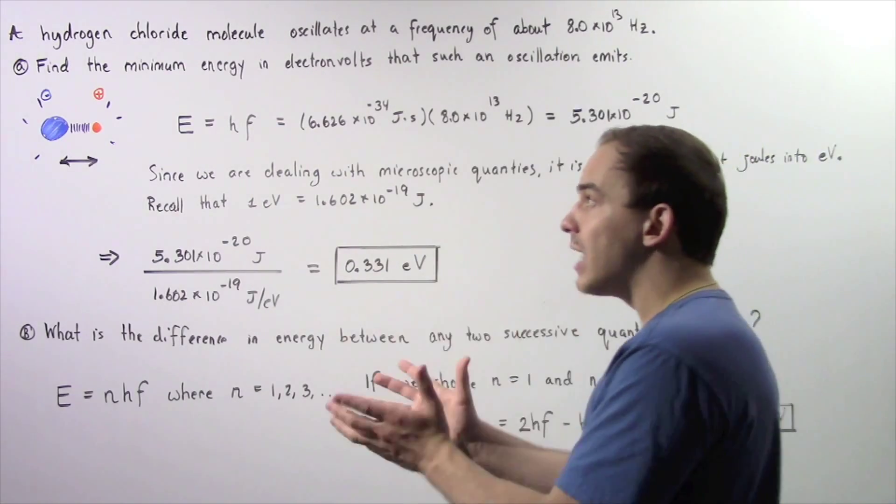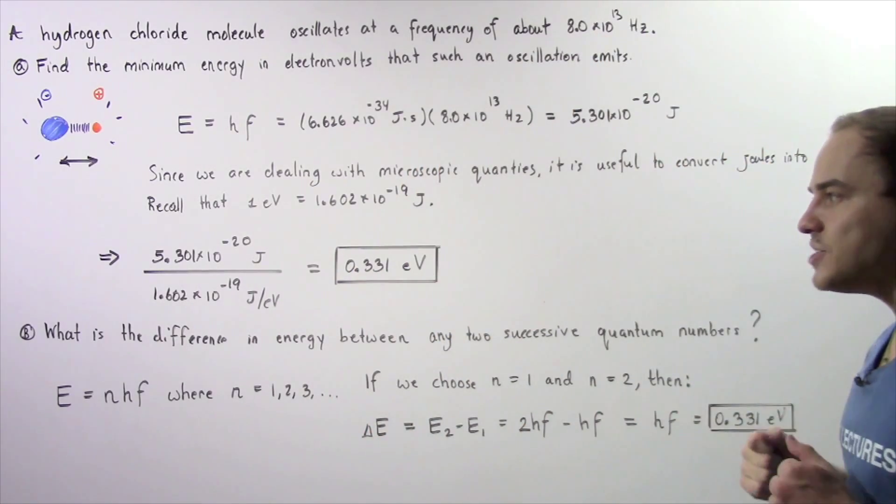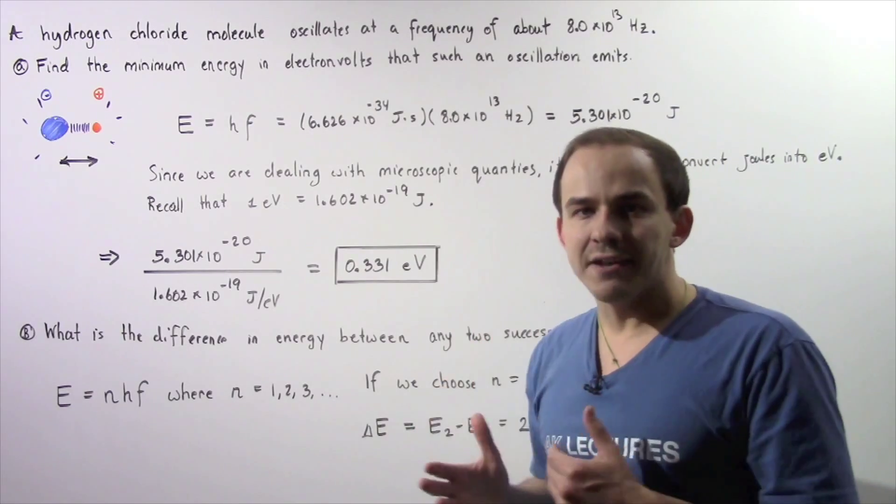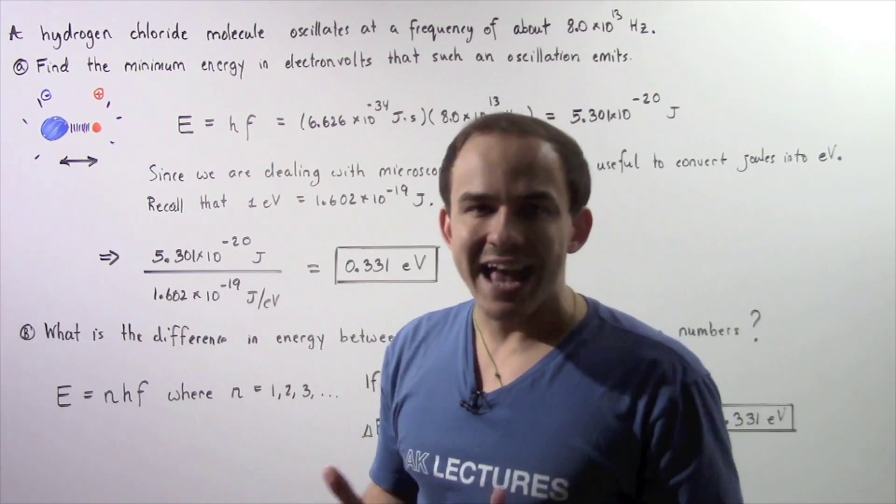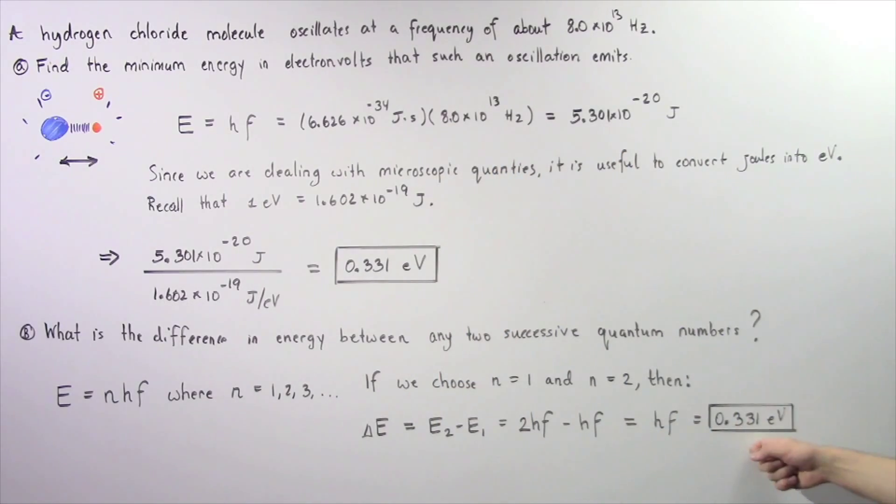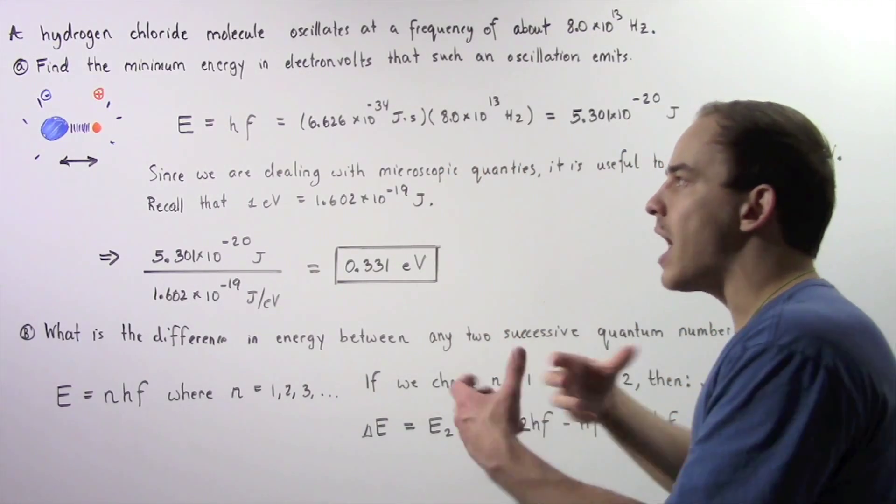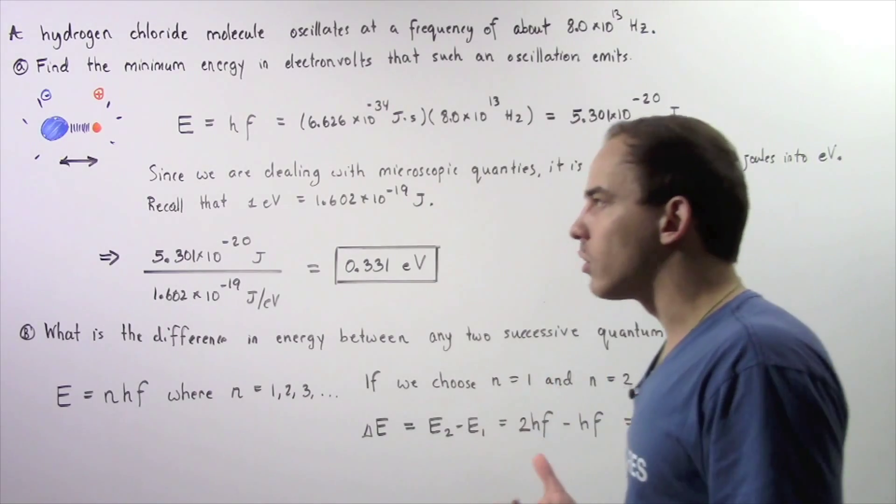So, for this particular molecule that has a certain specific oscillation, the difference in energy between any two successive quantum numbers is equal to this quantity, which is equal to the minimum amount of energy that one oscillation emits or absorbs.